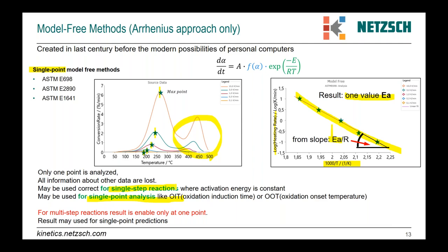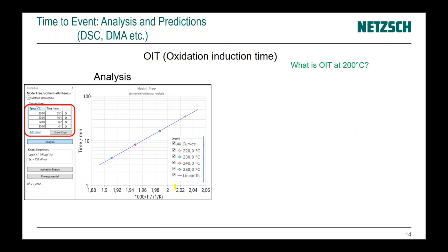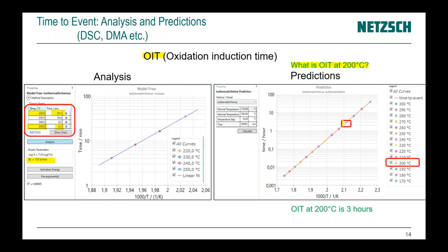Here is an example of single-point analysis for OIT, oxidation induction time. For example, at temperature 220°C, we have a time until onset of oxidation of 35 minutes. For higher temperature 250°C, we have only four minutes. Then we have all this data, find activation energy, and this activation energy can be used to find, for example, what is OIT at 200°C at a point where no measurement was done. With our software, we are able to make a simulation and find that it happens in three hours.